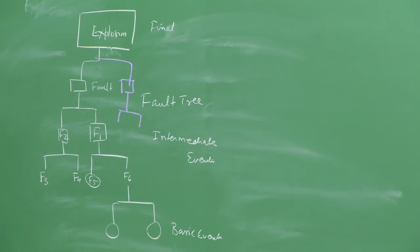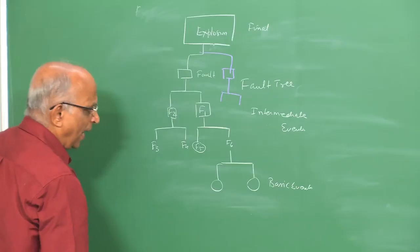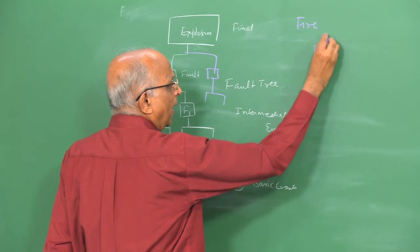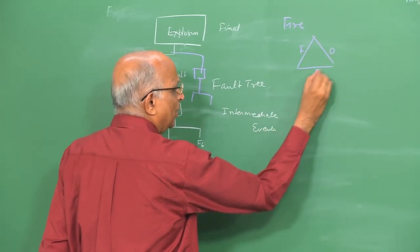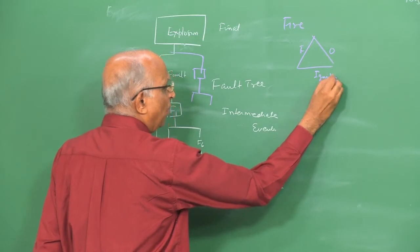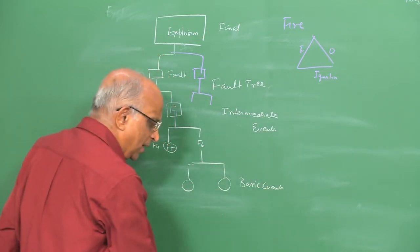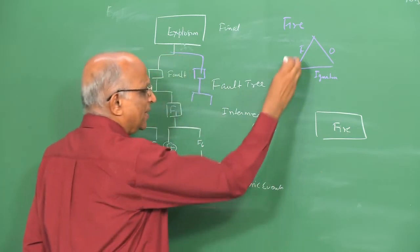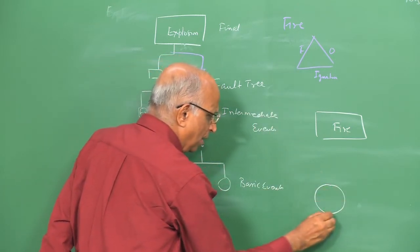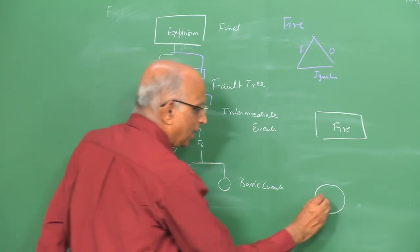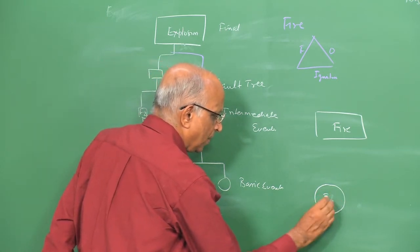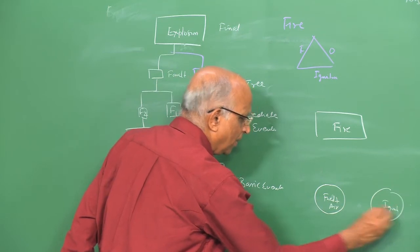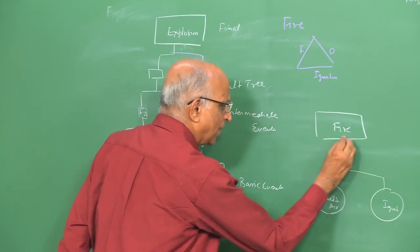Let us illustrate through an example. Let us say I have a fire. To have a fire I need a fuel, I need air — both have to mix — and I also need an ignition source. If the final event is a fire, then the basic events are: a fuel-air mixture which is available, and an ignition source. These two basic events lead to my final event of a fire.